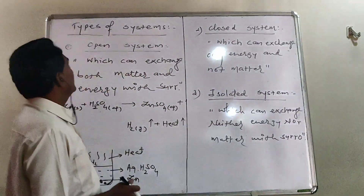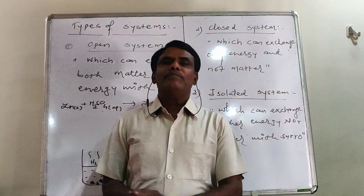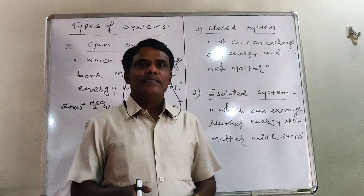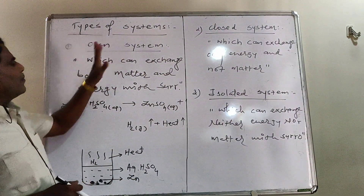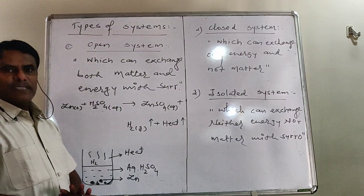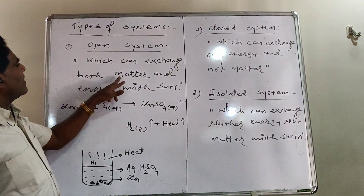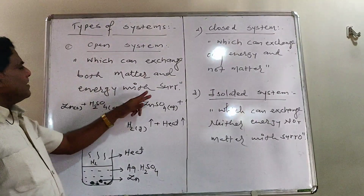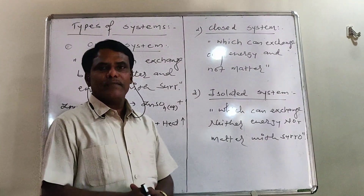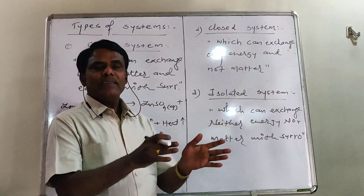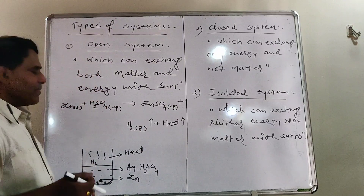Now let us see the types of systems. Depending upon the exchange of matter and energy between system and surrounding, systems are broadly divided into three types. First: Open system. An open system is that type of system which can exchange both matter and energy with the surrounding.